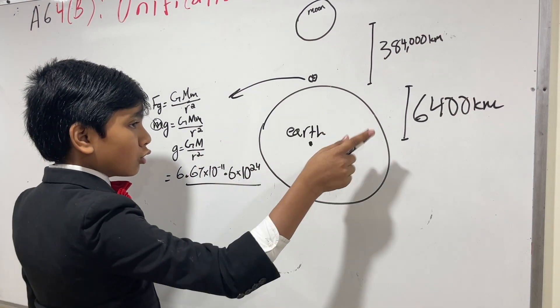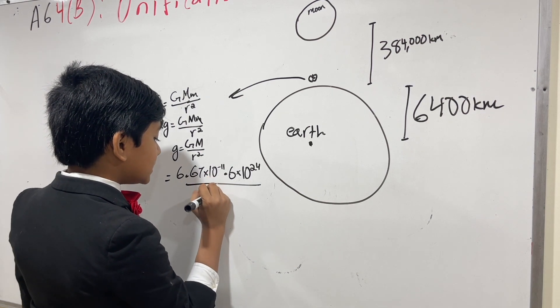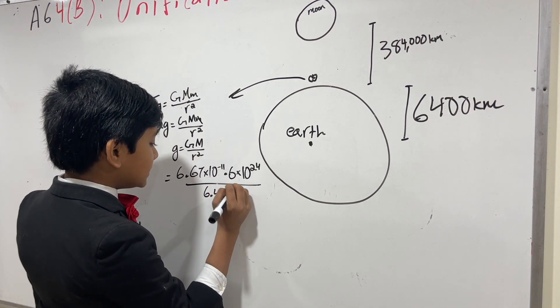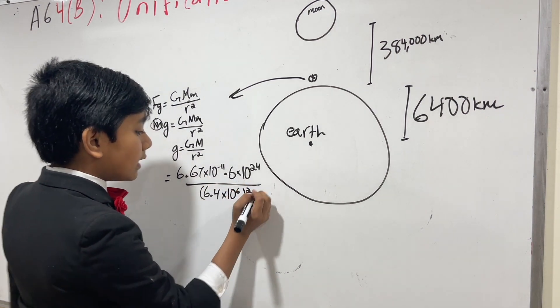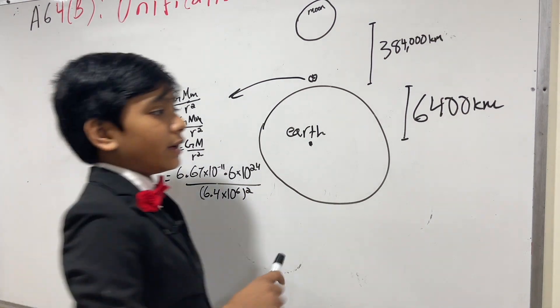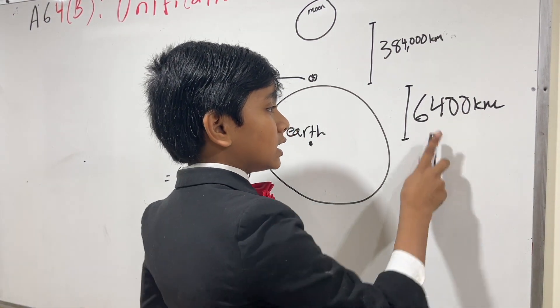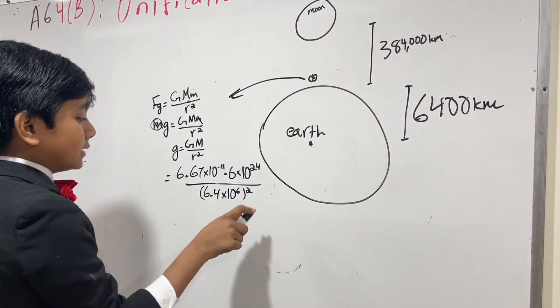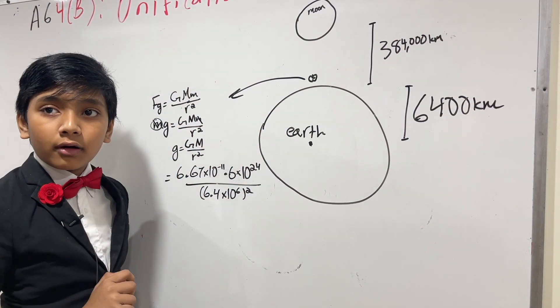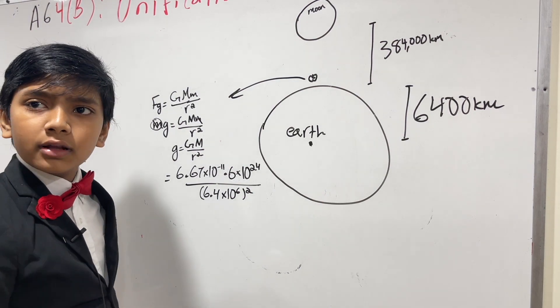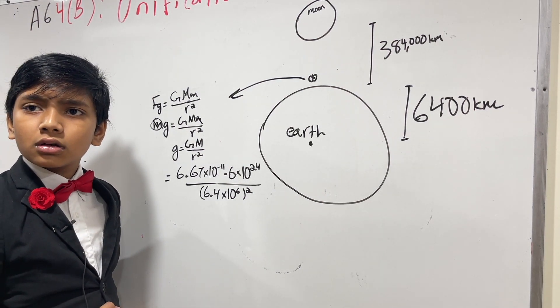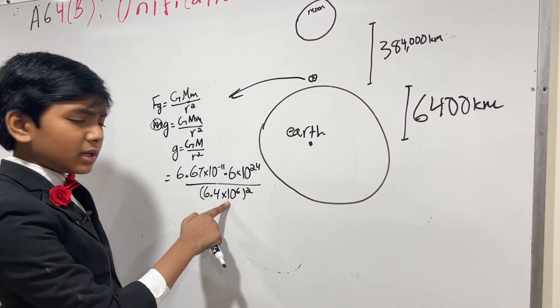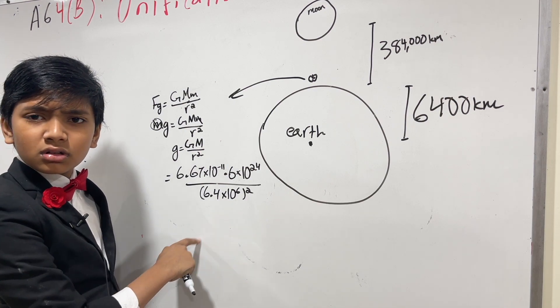And now we have r, or actually r squared, which is 6.4 times 10 to the 6th meters squared. And if it wasn't clear, I'm using meters, not kilometers. That's why this 6400 is different from this 6.4 million. Alright. So what? Well, you are not using it as a unit. No, I'm using meters. Oh yeah, 6.37, yeah, that's right.